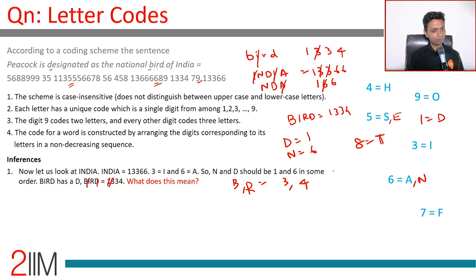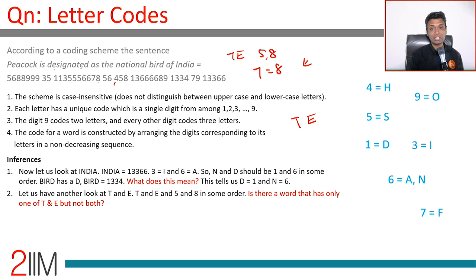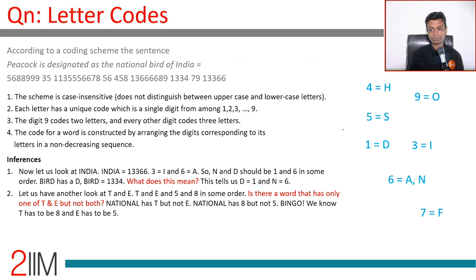So I is three and D is one. That means B and R are three and four in some order — we still need to resolve which is which. Summary so far: H=4, S=5, E=5, T=8, D=1, O=9, I=3, A=6, N=6, F=7. T is eight and E is five.